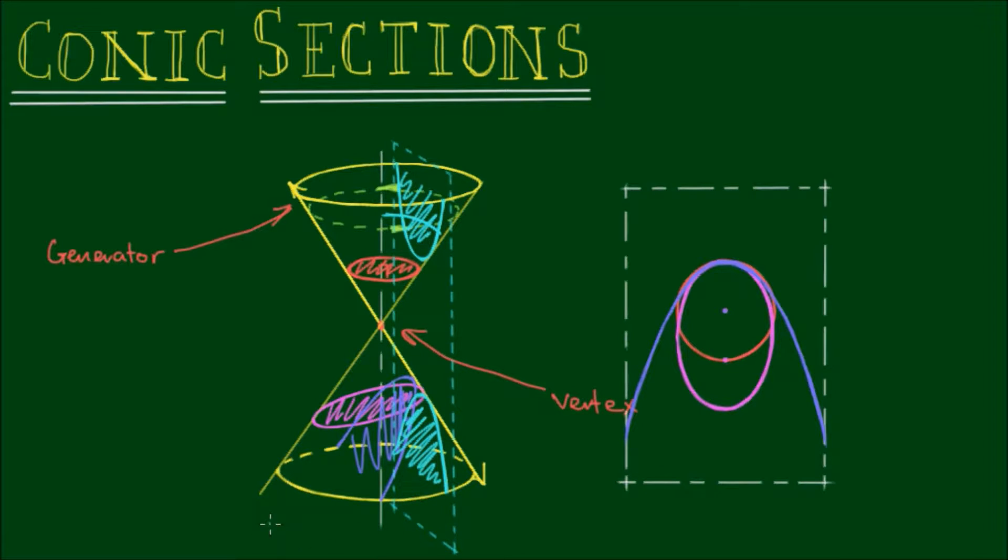And so once more, if we look perpendicularly at this cyan plane, we will for sure see that the curves at the intersection are two hyperbolas. And these also go off to infinity.